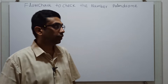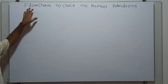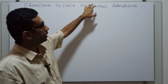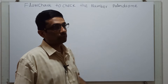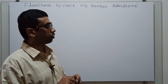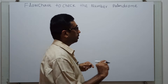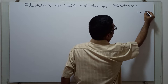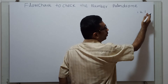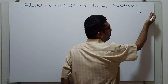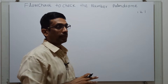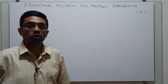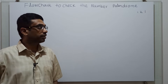Hello friends, in this video lecture we are going to draw a flowchart to check if the given number is a palindrome or not. So what is a palindrome? For example, if you take 1, 2, 1 — if you read it from left to right: 1, 2, 1, and you read it from right to left, the number is the same. That is the palindrome. To check the given number is a palindrome or not, we are going to draw a flowchart.